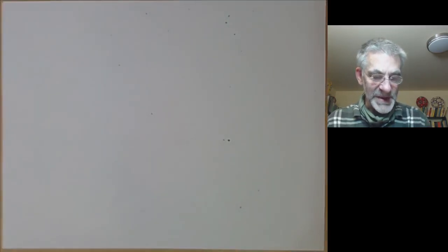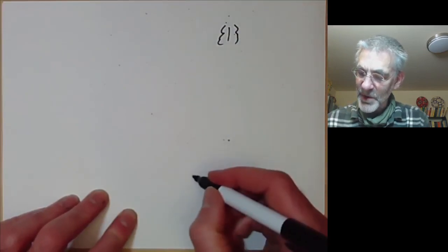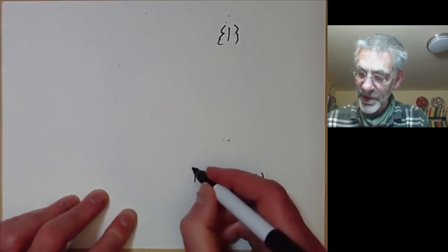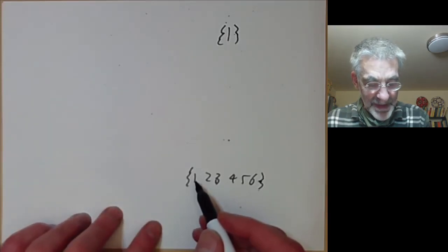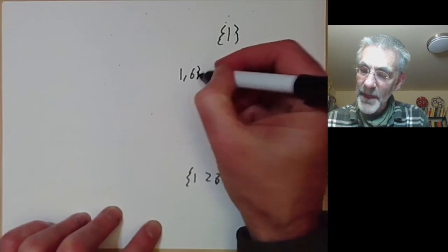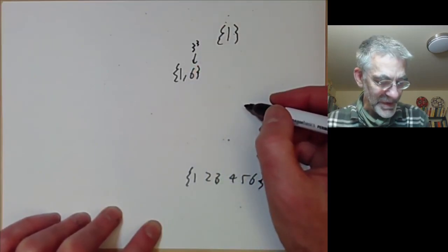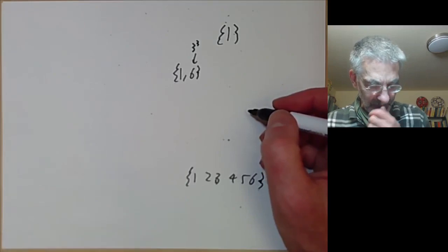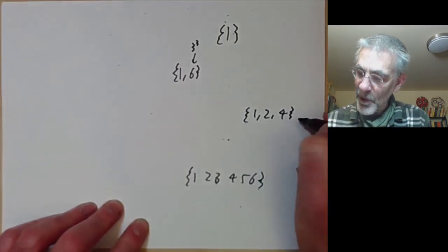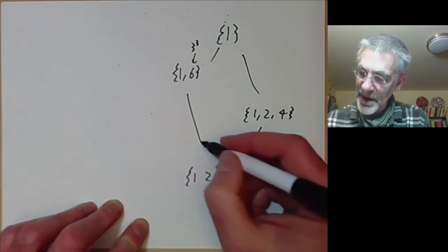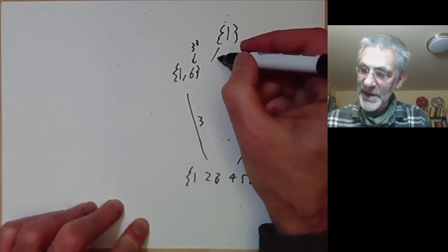The subgroups are: the trivial subgroup {1}, the whole group {1,2,3,4,5,6}, a subgroup of order 2 generated by the cube of the generator (which is 6, i.e., {1,6}), and a subgroup of order 3 consisting of {1, 2, 4}. The indices are: index 2 for the order-3 subgroup, index 3 for the order-2 subgroup, and so on.